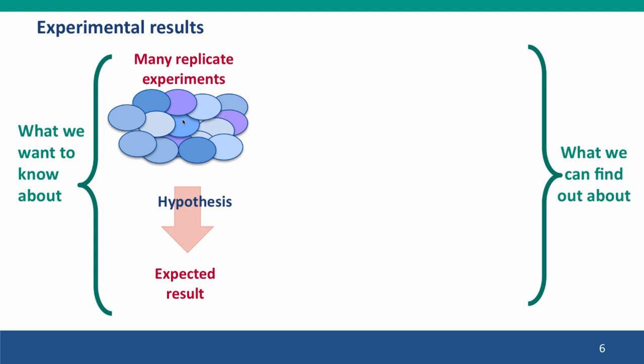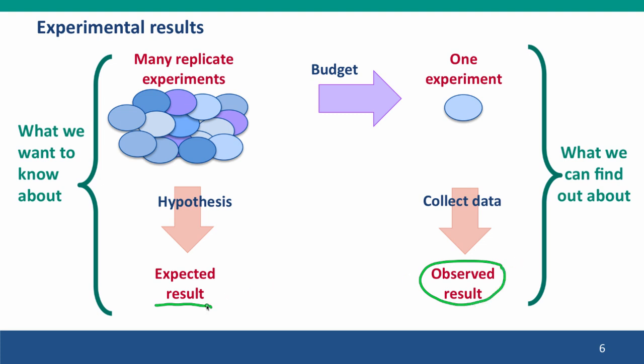We can say if our hypothesis is true, if this phenotype is controlled by two alleles at one locus, then this is the result that we expect to see. But we can't afford to do all of this many results to test our hypothesis. Instead, we take a sample population, maybe we do one cross, and we analyze the results. We get an observed result, and then we want to ask, is our observed result consistent with the result we would expect if our hypothesis was true and we had been able to do a very large number of experiments.